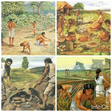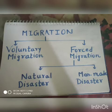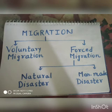Now we will revise the types of migration. There are two types of migration: voluntary migration and forced migration. Forced migration is further divided into two parts: natural disaster and manmade disaster. Let us discuss them one by one.